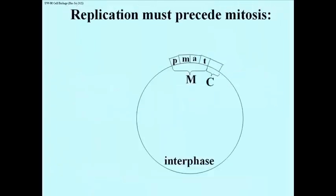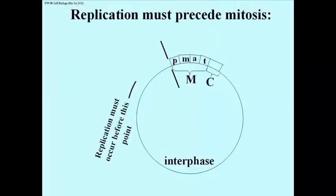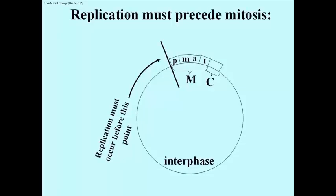That simply means that replication must precede mitosis. Replication must occur at some point in interphase before the beginning of mitosis, before prophase, before the P phase of mitosis.